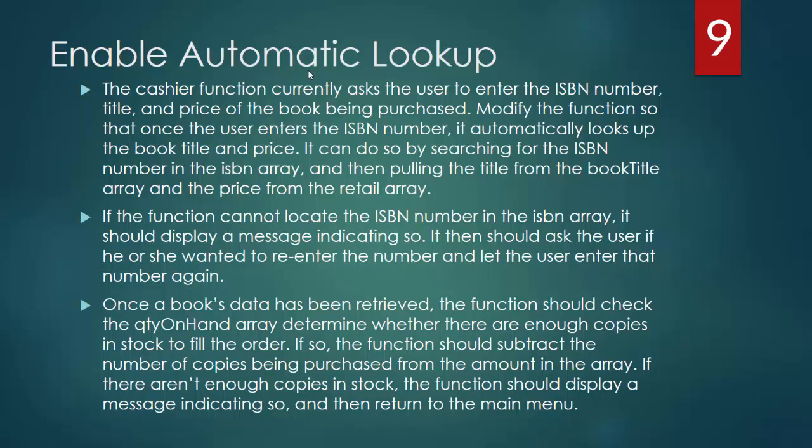We will enable automatic lookups. The cashier function currently asks the user to enter the ISBN number, title, and price of the book. We will modify the function so that once the user enters the ISBN number it automatically looks up the book title and price by searching for the ISBN number in the array. If the function cannot locate the ISBN number, it should display a message and ask the user if he or she wants to re-enter. Once the book's data is retrieved, the function should check the quantity on hand array and determine whether there are enough copies in stock. If so, it subtracts the number of copies being purchased; if not, it displays a message indicating so.